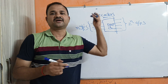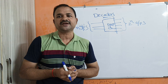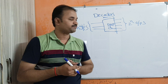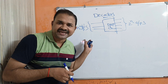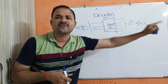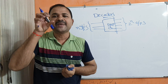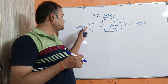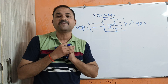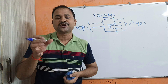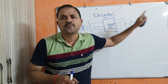Let us discuss about decoder. A decoder is a combinational circuit that accepts n inputs and produces 2 power n outputs. Decoder can also be called a many-to-many circuit, because it accepts many inputs and produces many outputs. So decoder decodes n number of input lines to 2 power n outputs.